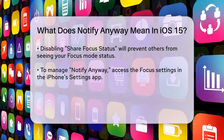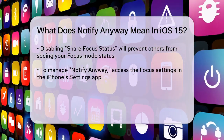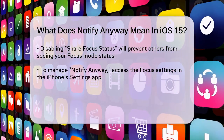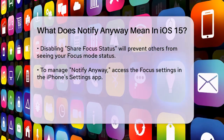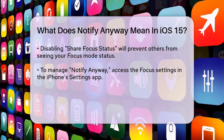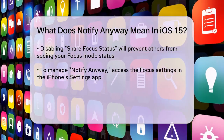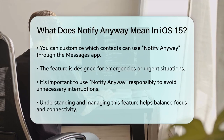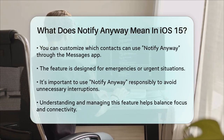The notify anyway feature is meant for emergencies or urgent situations. If you're in a meeting or trying to focus, it's good to know that important messages can still get through. However, it's also important to use this feature responsibly to avoid unnecessary interruptions.